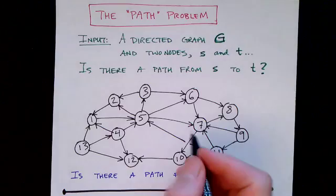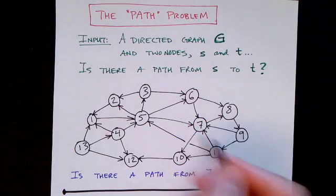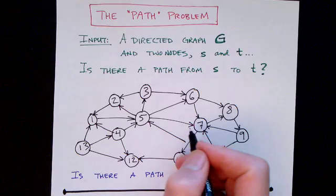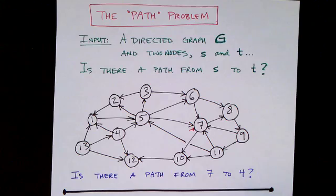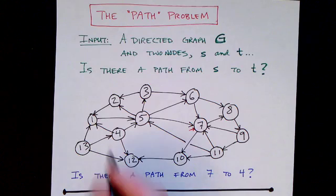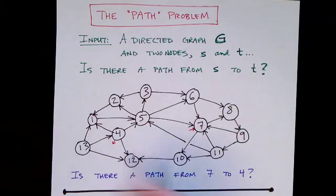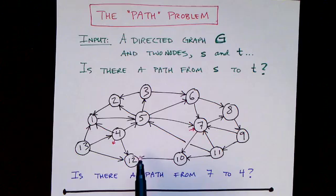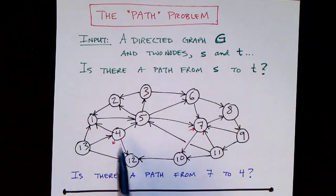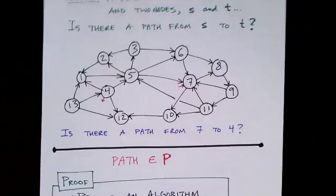For example, we might be asking whether there's a path from 7 in this graph to 4. So can we find a path from 7 in this graph to 4?